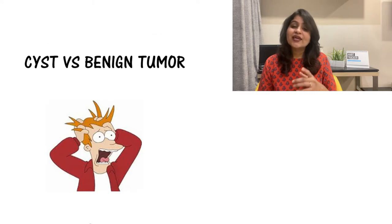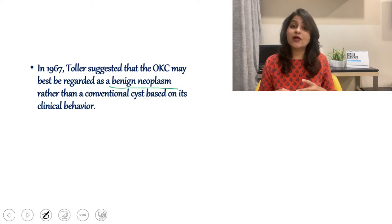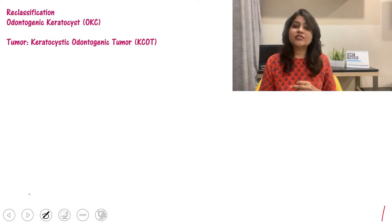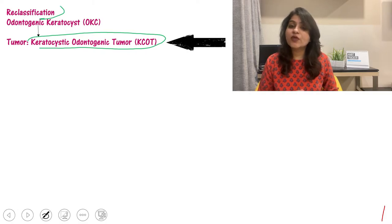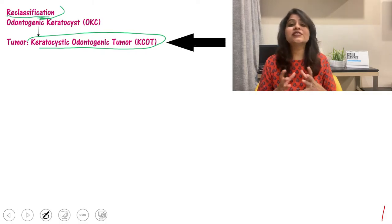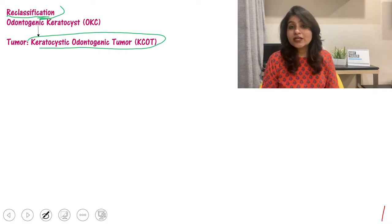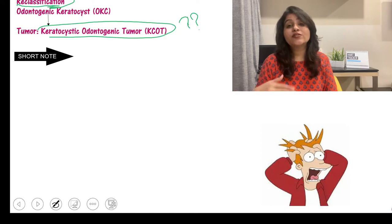There is ongoing debate about whether OKC is a cyst or a benign neoplasm. Toller in 1967 suggested that OKC should be considered a benign neoplasm — that is, a neoplasm showing presence of a cystic cavity. In 2005, the WHO renamed OKC as KCOT — keratocystic odontogenic tumor — and this can be a viva question. The WHO placed it in the classification of odontogenic tumors.